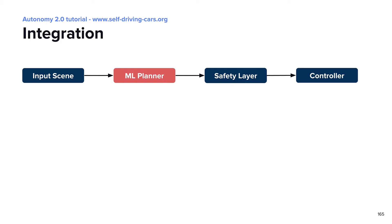Now with the evaluation piece sorted out, let's chat about how ML planner deployment looks like and how it's different. The key unique part of the ML planner is that its deployment usually requires a safety layer operating in the stack. Here's a simple diagram showing how the ML-first planner stack works. The input is first fed to the ML planner to produce the ego trajectory. Before sending it to the controller to execute, the safety layer checks that the ML trajectory is safe enough. Otherwise, it falls back to a simple expert trajectory to avoid catastrophic failures.